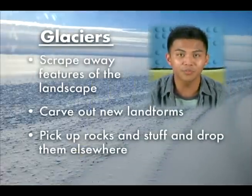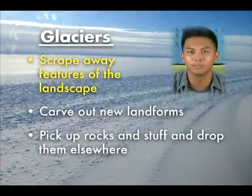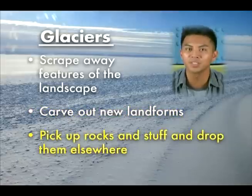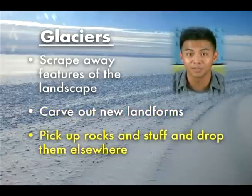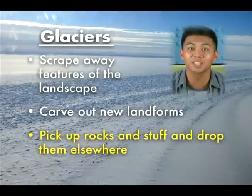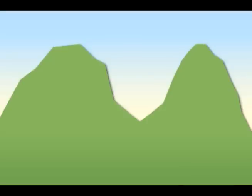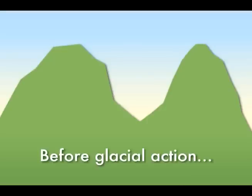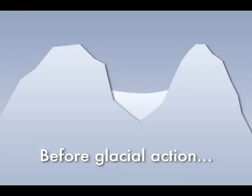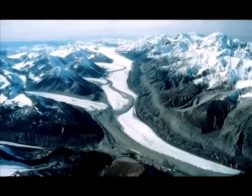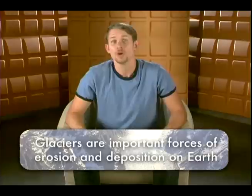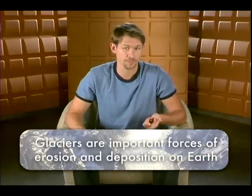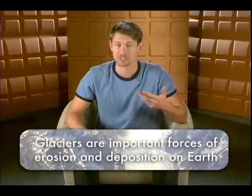As they flow, these rivers of ice scrape away features of the landscape, smoothing it out, and they carve out new landforms. They pick up lots of rocks — even boulders the size of buildings — and drop them off elsewhere. Here's a mountain before any glacial action, and here's the same mountain after glaciers slid down it over thousands or millions of years. Glaciers turn smooth mountain sides into jagged peaks and valleys. Just like surface water and groundwater, glaciers are important forces of erosion and deposition on Earth.